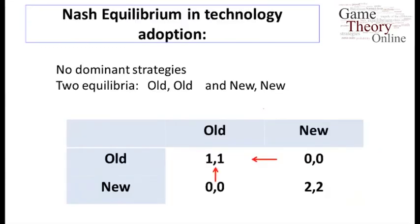Let's take a look at another example. Here two players must both choose technologies — either an old technology or a new technology. They benefit from coordinating, so each player wants to match their technology use to the other person's. It might be a friend, a co-author, somebody exchanging files — they want a compatible system. Both using the old system or both using the new system are going to be the natural equilibria. If the other person's using old, you get a payoff of one from using old and zero from using new.